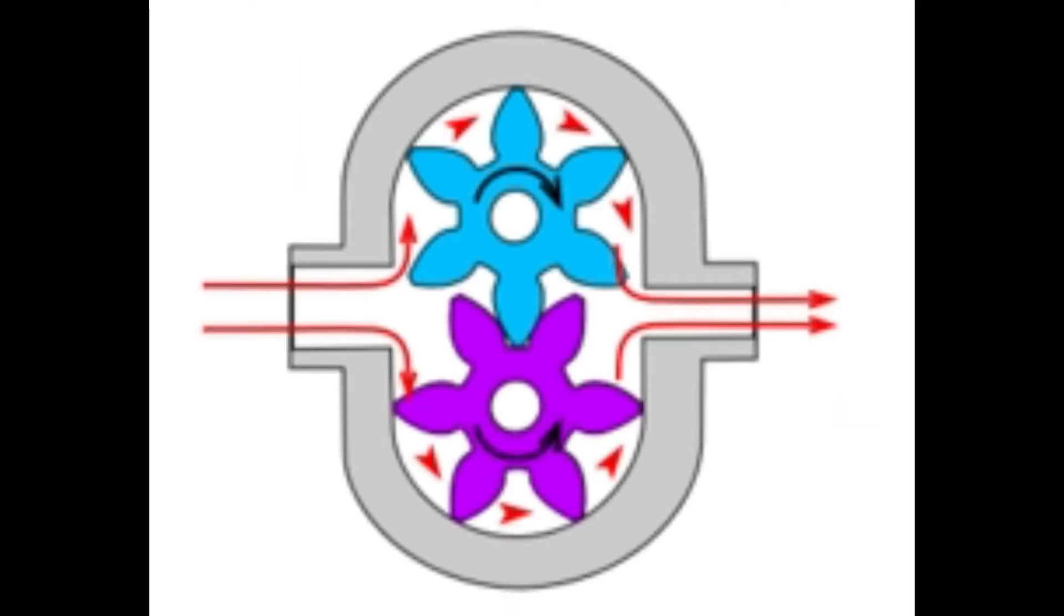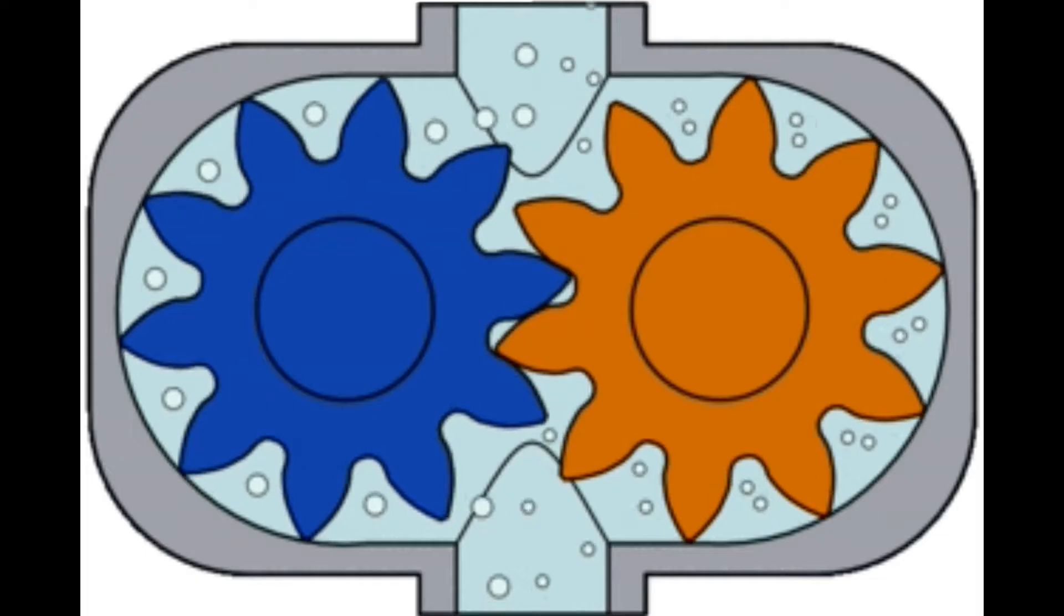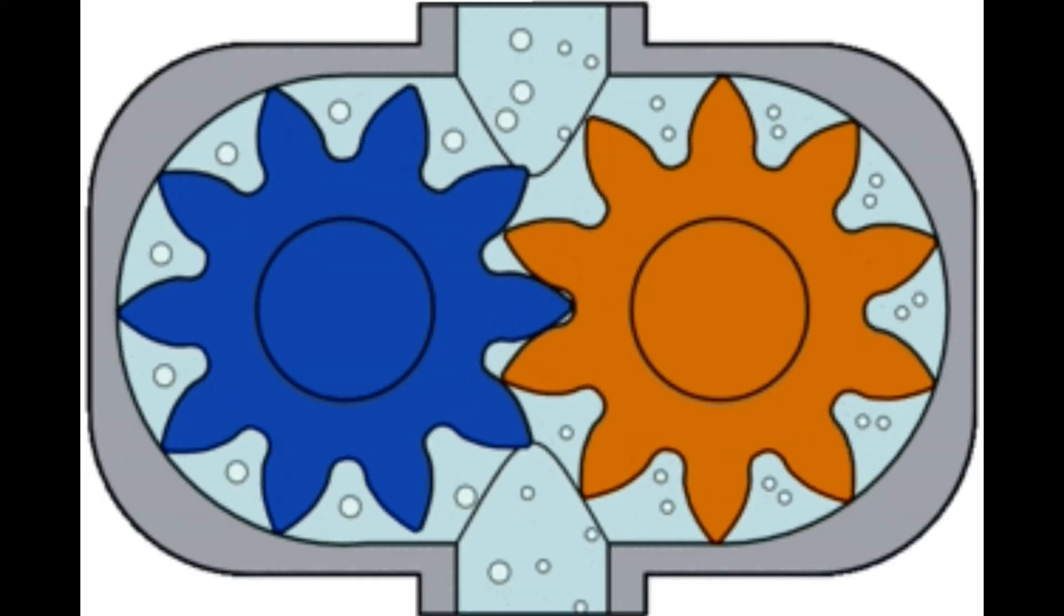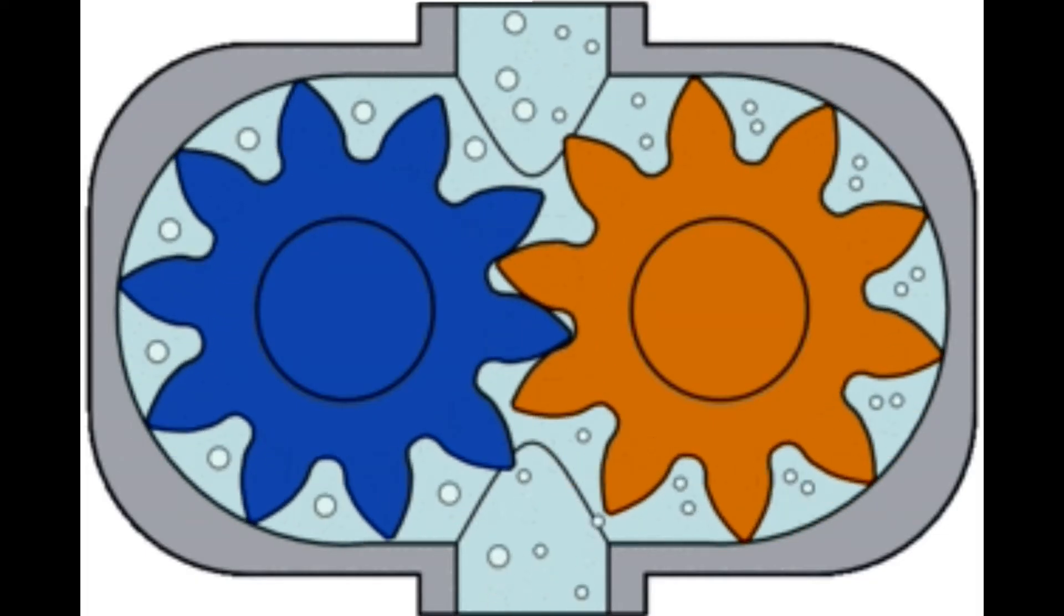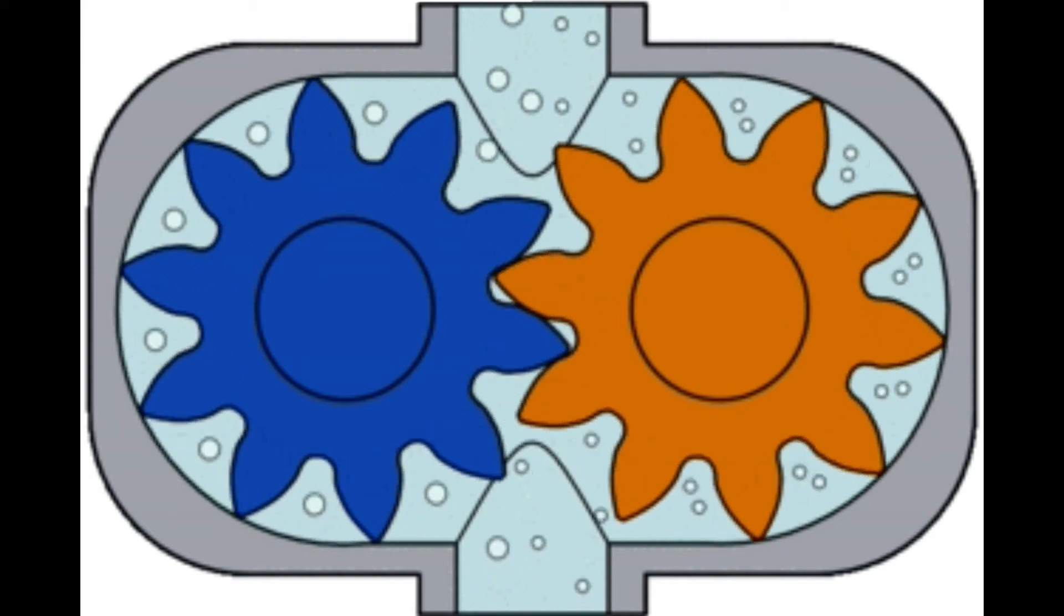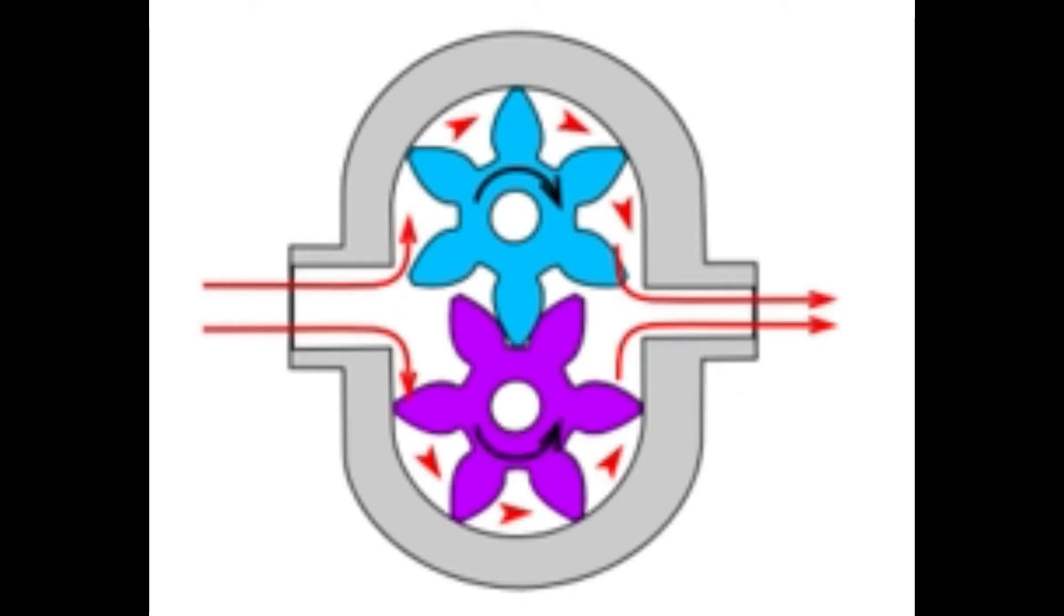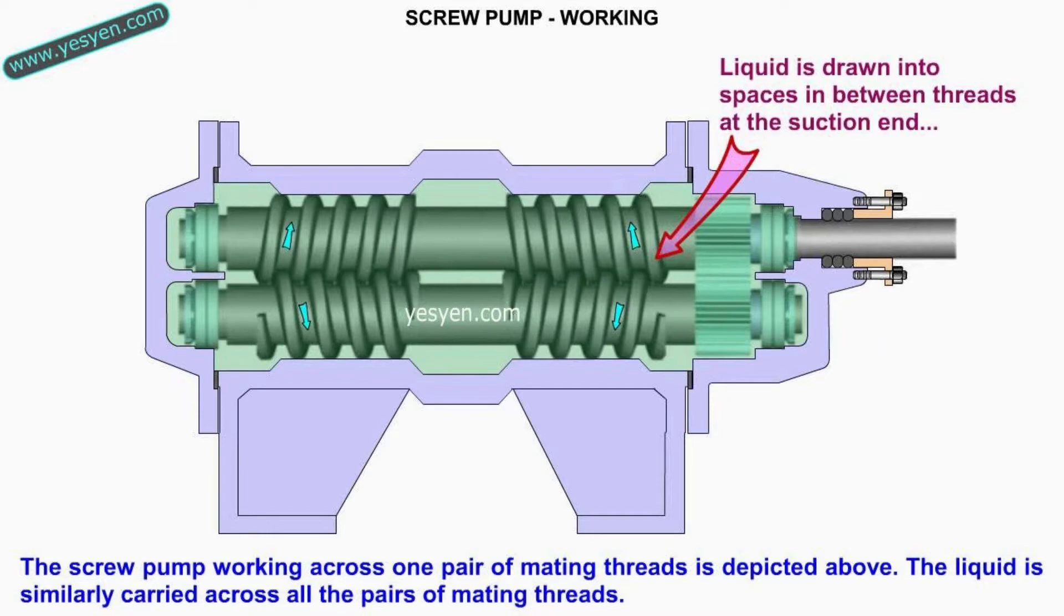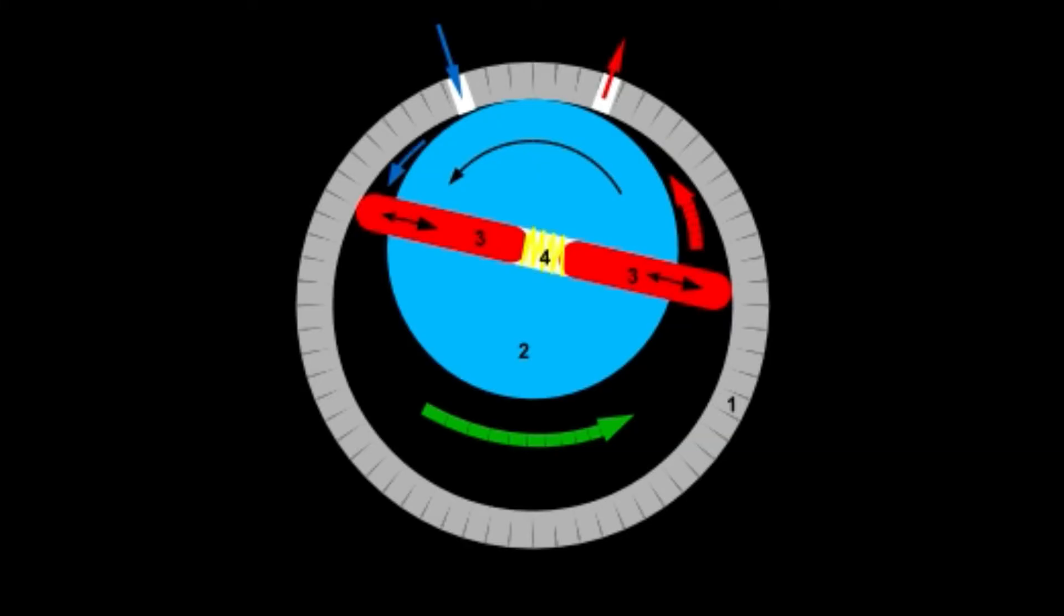Let's talk about rotary positive displacement pumps. These pumps move fluid using a rotating mechanism that creates a vacuum that captures and draws in the liquid. Rotary positive displacement pumps fall into three main types: gear pumps, screw pumps, and rotary vane pumps.